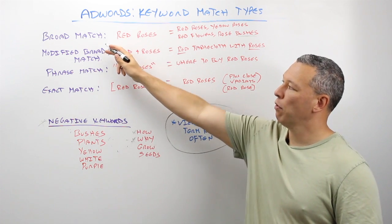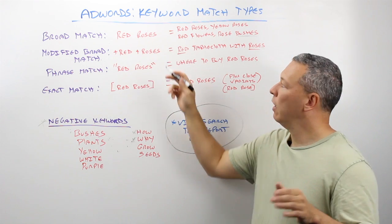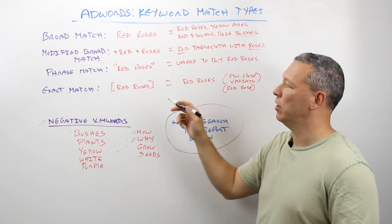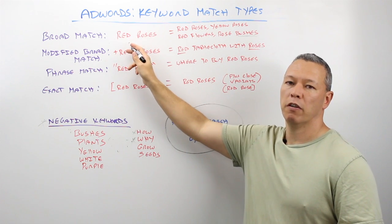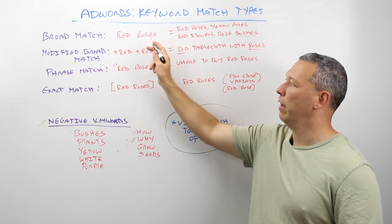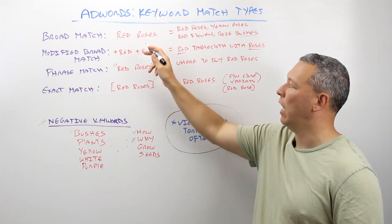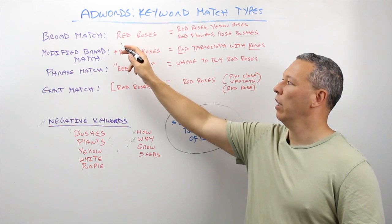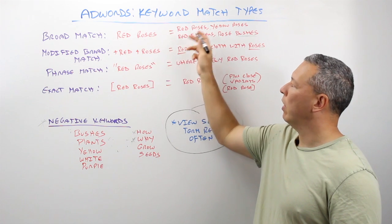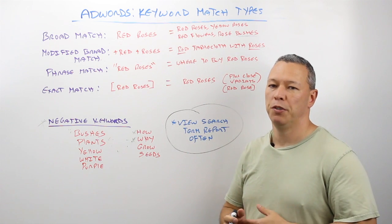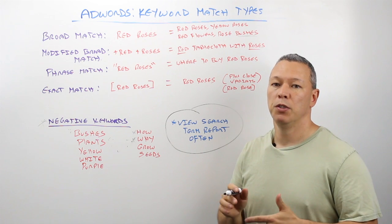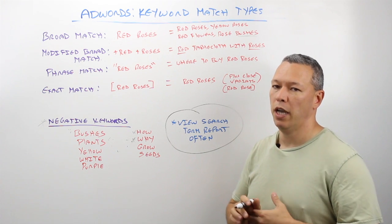If you use broad match for 'red roses,' you may get search terms triggered when somebody types in red roses, yellow roses, red flowers, or red bushes — all of these could trigger your ad because Google is taking a license on the words 'red' and 'roses.' They may substitute flowers for roses, or use yellow, red, or pink. So you're giving Google a broad license on who to show your ad to, and many of them may not be relevant to who you're trying to target. So you have to be careful with broad match.